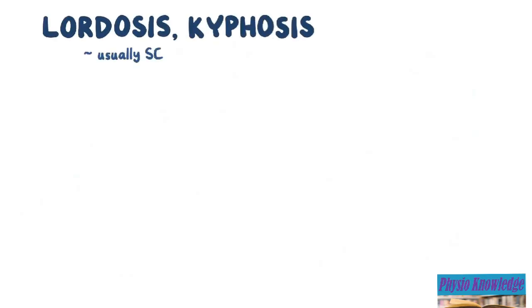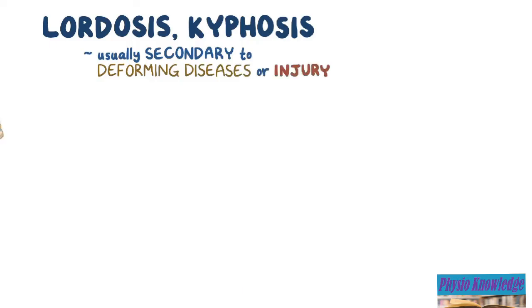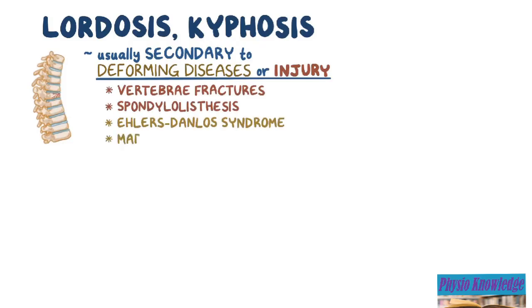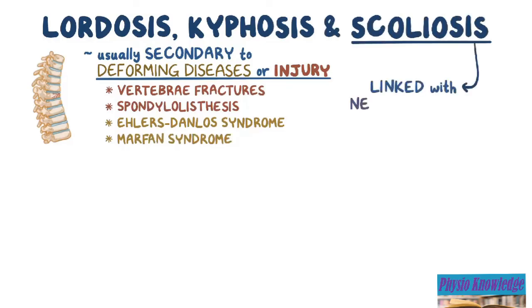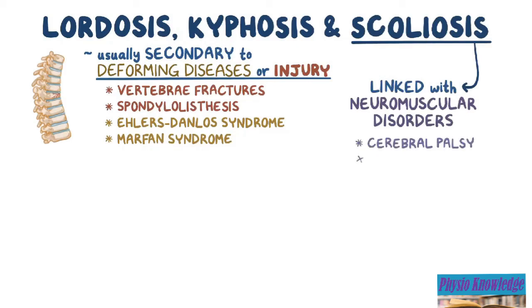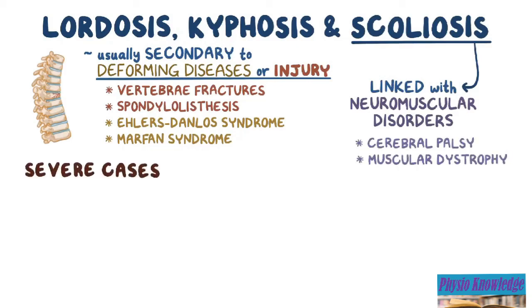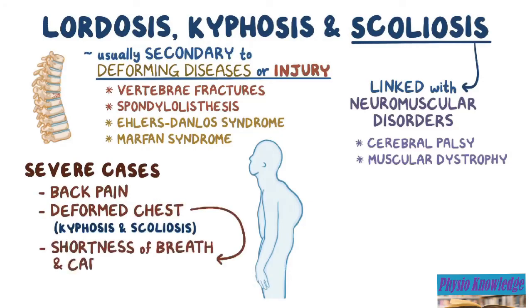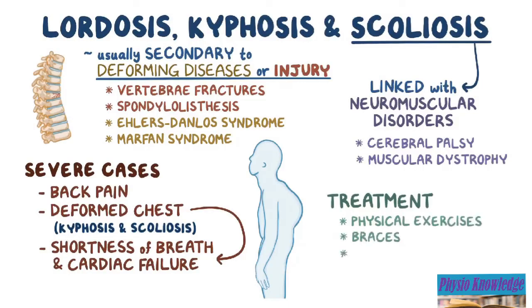As a quick recap: lordosis and kyphosis are usually secondary to diseases or injuries which deform the vertebrae and ligaments, such as vertebral fractures, spondylolisthesis, Ehlers-Danlos syndrome, and Marfan syndrome. Scoliosis is linked with some neuromuscular disorders like cerebral palsy or muscular dystrophy. In severe cases, lordosis, kyphosis, and scoliosis can cause back pain. Kyphosis and scoliosis may deform the chest resulting in shortness of breath and cardiac failure. Treatment usually involves physical exercises, braces, and pain medication, or surgery in severe cases.